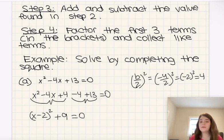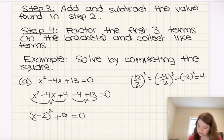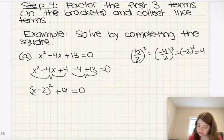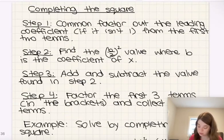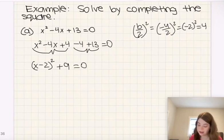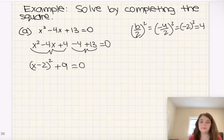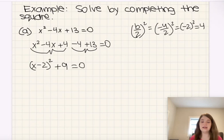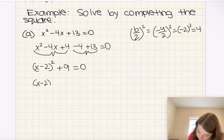The great thing about vertex form is it's not too challenging to solve at this point. These were just the steps for completing the square; now we just need to solve for x by isolating x. So I'm going to subtract 9 from both sides, and we get that x minus 2 squared is equal to negative 9.